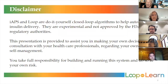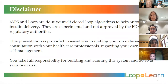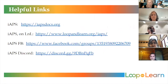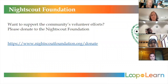As usual, we do our disclaimer. IAPS and Loop are do-it-yourself closed-loop algorithms to help automate insulin delivery. They are experimental and not approved by the FDA or other regulatory authorities. This presentation and open mic time is provided to assist you in making your own decisions in consultation with your healthcare professionals regarding your own diabetes self-management. You take full responsibility for building and running the system and do so at your own risk. We have links in the video, and if you want to support the community, we suggest going to the NightScout Foundation — they work very hard with developers and groups like us.